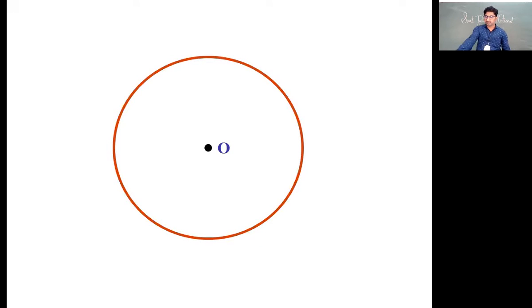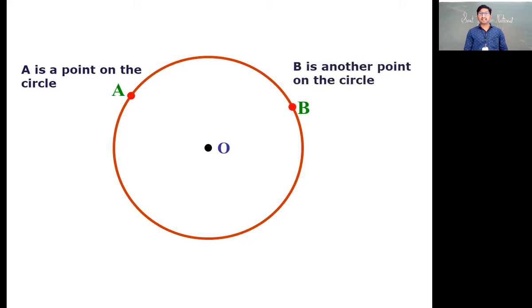This is center and this is circle around the center point. We have group of points at equal distance from center. Place any two points on circle, one as A, other as B. Then joining those two points, we will see a line segment. This line segment we call as line segment AB.